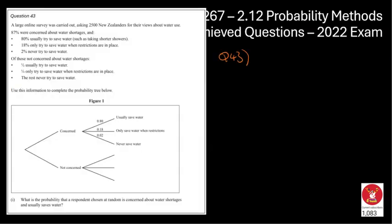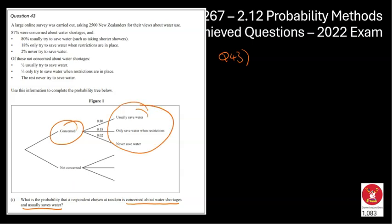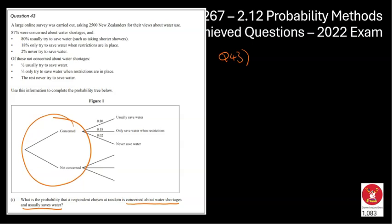We're now onto question number 43. This one was nice because they've actually started the probability tree for you. The question asks: what is the probability that a respondent chosen at random is concerned about the water shortages and usually saves water? We can see whether they're concerned or not concerned. The first thing to note: 87% of people were concerned about shortages. So that's 0.87, which means the remaining 13% — 0.13 — are not concerned about these water shortages.